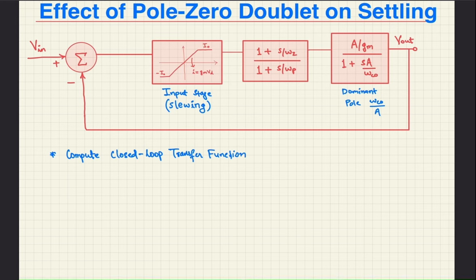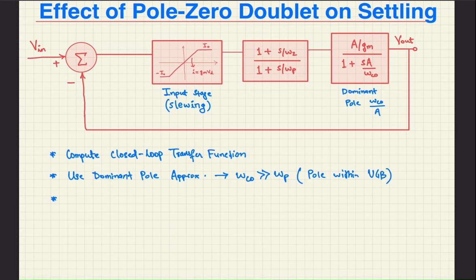In order to analyze the step response of such a system, I won't go through the exact derivation, but the procedure is as follows. You first compute the closed loop transfer function. Next, you use the dominant pole approximation, and in this case, you can take an approximation that omega C0 is much greater than omega P, meaning that the pole lies within the bandwidth. Then you express the transfer function as partial fractions and you take the inverse Laplace transform to get the time domain expressions.